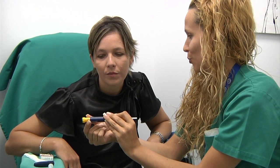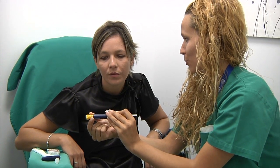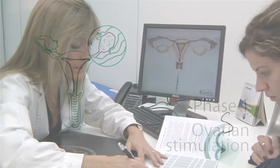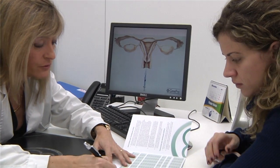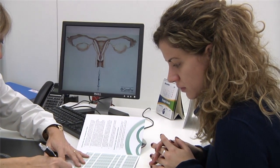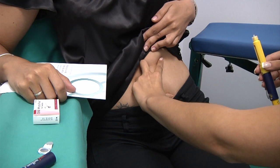The treatment usually lasts about 8 to 10 days and consists of three phases. The first is ovarian stimulation, which involves multiple ovulation through hormonal treatment.